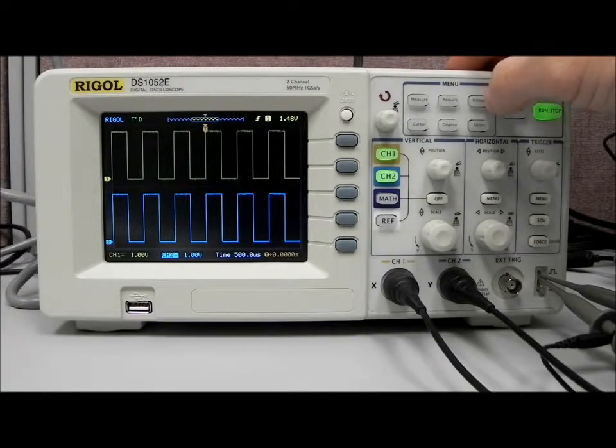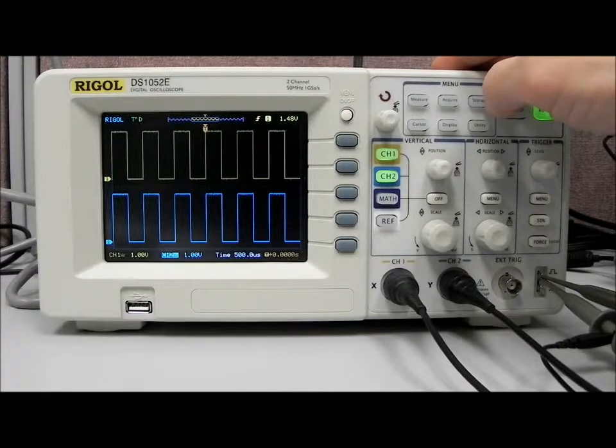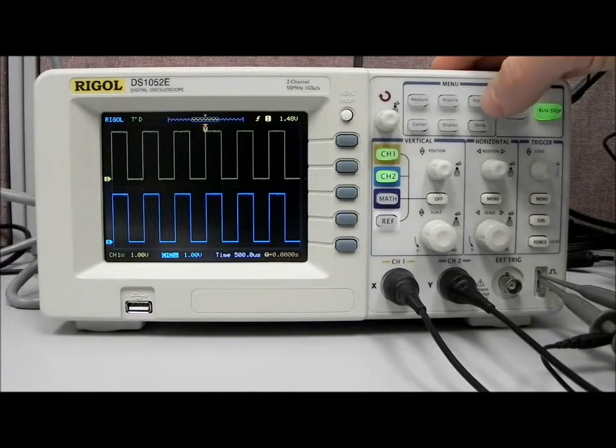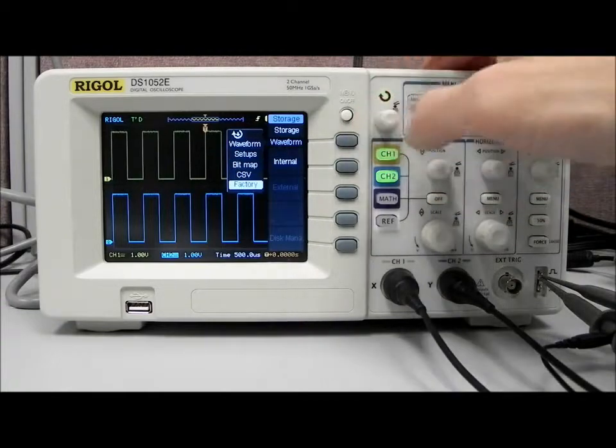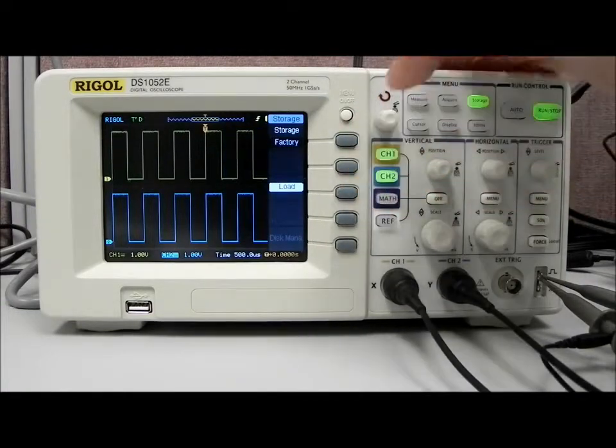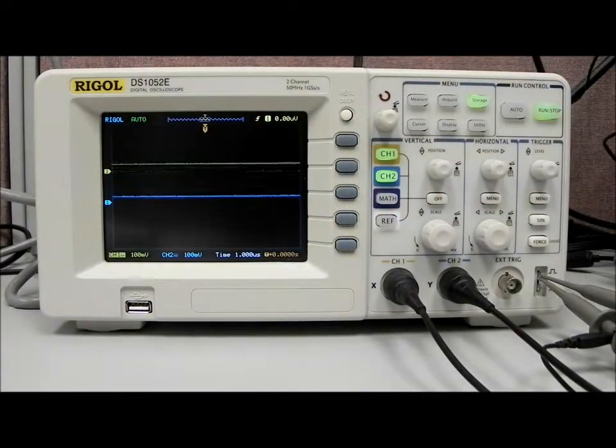If we want to get rid of the square waves or we have some kind of issue that we want to get back to factory default settings, that's very straightforward. We just want to press storage, select waveform, and rotate down to factory, and then we can load the factory settings and we'll get back to where we were.